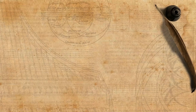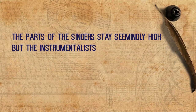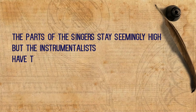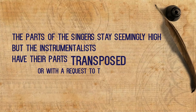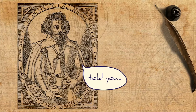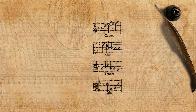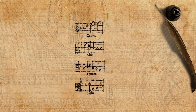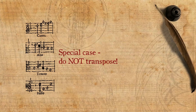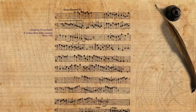The common feature of all these sources is that the parts of the singers stay seemingly high, but the instrumentalists — who have a direct link between a written note and its actual sound — have their parts transposed, or with a request to transpose. The final outcome in these cases is similar to what the theorists ask. In addition to direct implications for transposition, we have also warnings next to pieces in high clefs to exceptionally not transpose, implying that otherwise they would have been transposed. In Frescobaldi's canzona for one voice, for example, which is written in a G2 clef — a high clef — we find the remark COME STA, meaning 'as it is.'